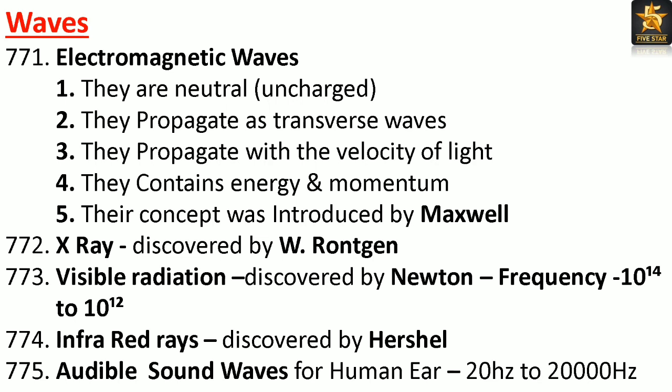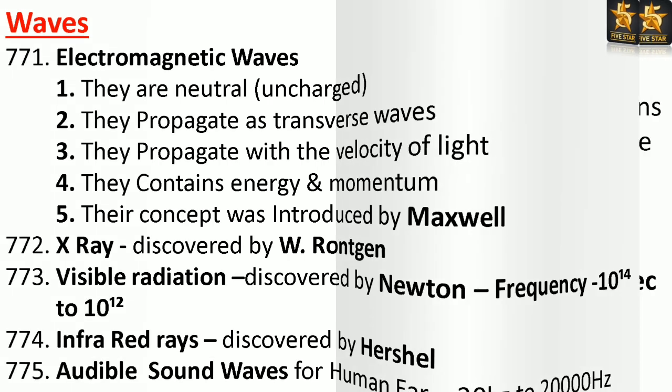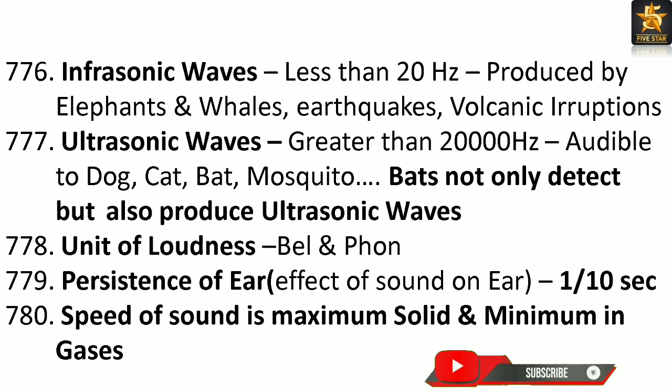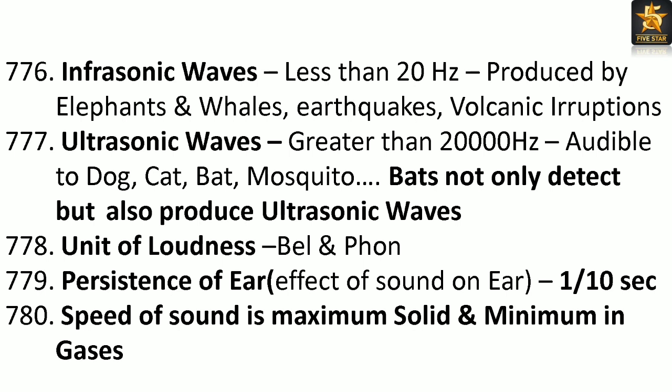Audible sound waves for the human ear: 20 Hz to 20,000 Hz. Infrasonic waves: less than 20 Hz, produced by elephants, whales, earthquakes, and volcanic eruptions. Ultrasonic waves: greater than 20,000 Hz, audible to dogs, cats, bats, and mosquitoes. Bats not only detect but also produce ultrasonic waves.